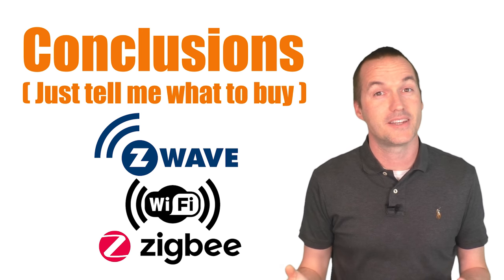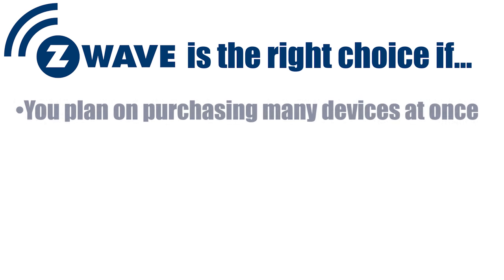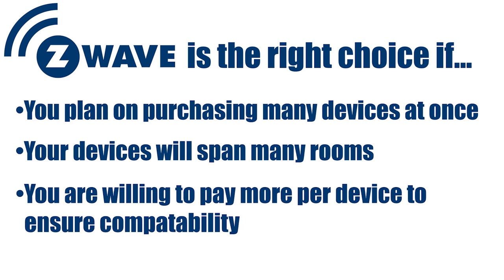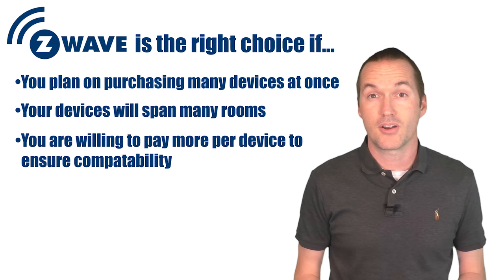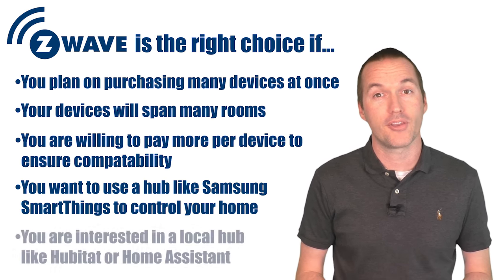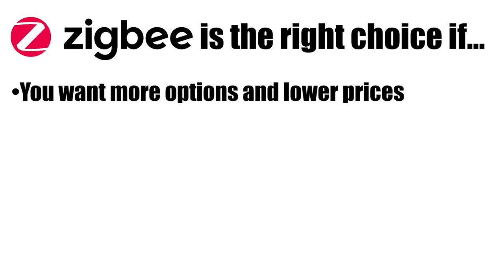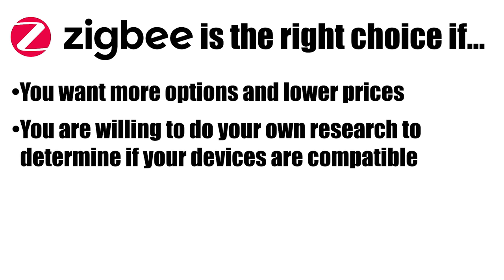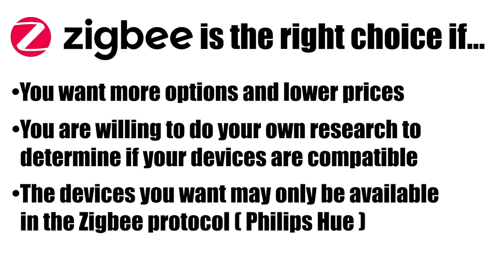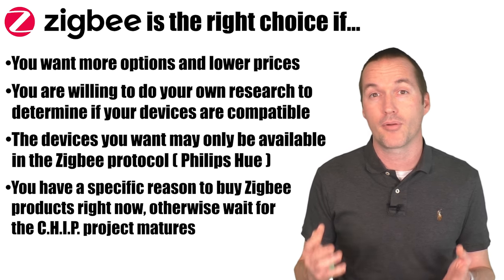If you watched this video to decide which technology to use but ended up more indecisive, here's the most condensed advice I can offer. Choose Z-Wave if you're going to buy a lot of products at once, put them all over your house, and don't mind spending a little more per device — the more Z-Wave products you have, the better your mesh and the more reliable your network. If you're just getting started, the Samsung SmartThings Hub is easy to use, but if you value privacy, it's worth looking into a local solution like Hubitat or Home Assistant. Zigbee sounds good in theory because products are cheap and diverse, but not all Zigbee devices can communicate with each other, and proprietary Zigbee networks like Philips Hue may form separate meshes that interfere with your main Zigbee mesh. Unless you have a specific reason to buy Zigbee right now, it's probably best to go a different way until the Connected Home Over IP project reaches maturity.